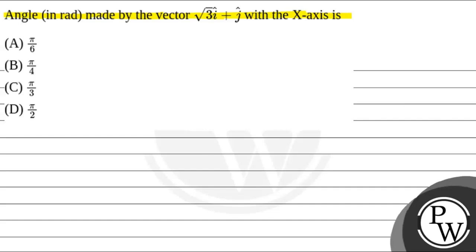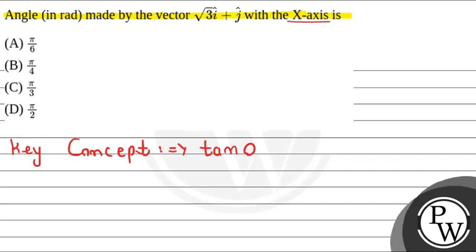So here we have a vector, and we will find the angle made by this vector with the x-axis. We will simply use the formula, which will be equal to the vertical component divided by the horizontal component of that vector. By this concept, we will use the formula.